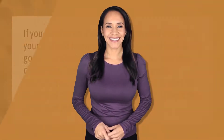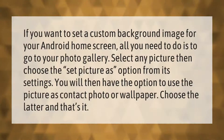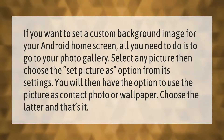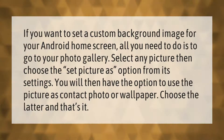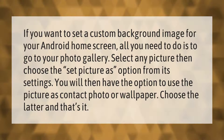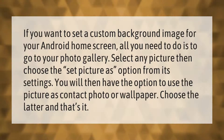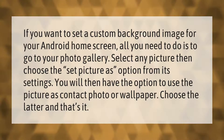If you want to set a custom background image for your Android home screen, all you need to do is go to your photo gallery, select any picture, then choose the 'Set picture as' option from its settings. You will then have the option to use the picture as a contact photo or wallpaper — choose the latter and that's it.